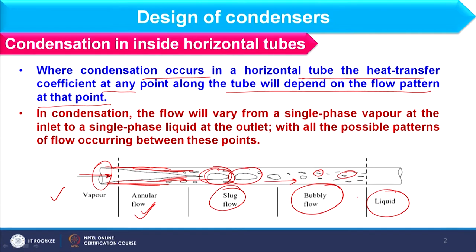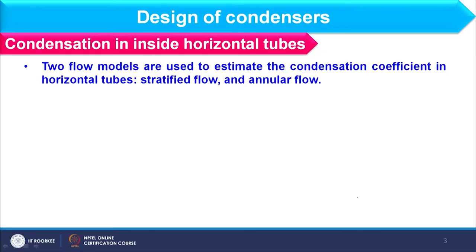From pure vapor to pure liquid, different flow patterns change as condensation proceeds, and this happens only in the horizontal tube. To account for these patterns in the design of a condenser, we can use two models: the stratified flow model and the annular flow model.